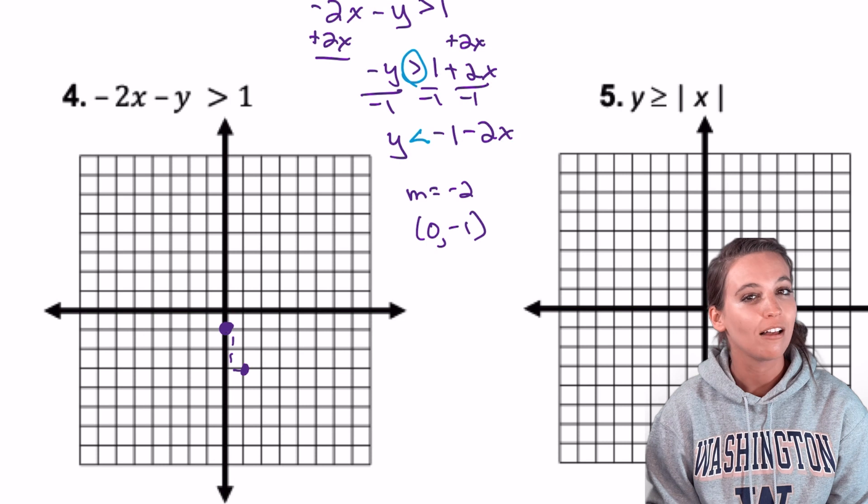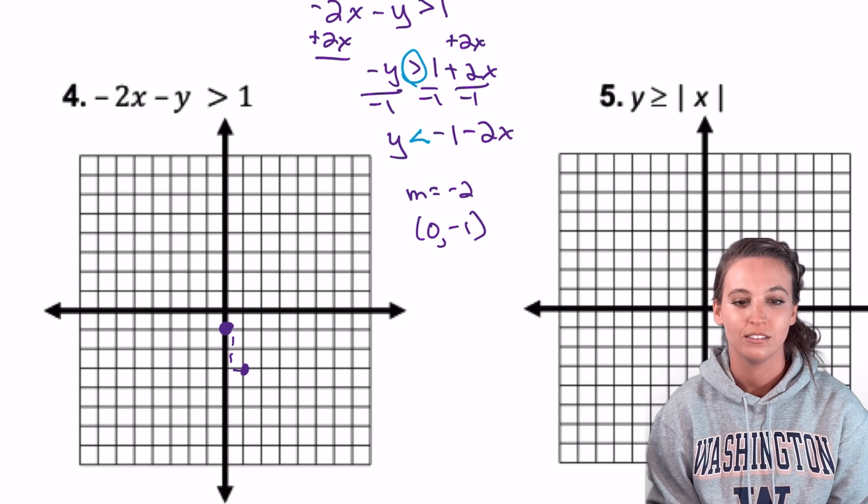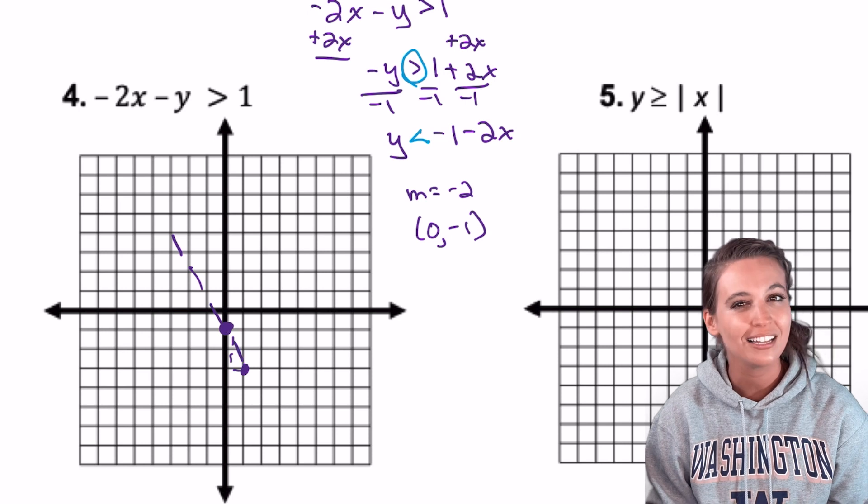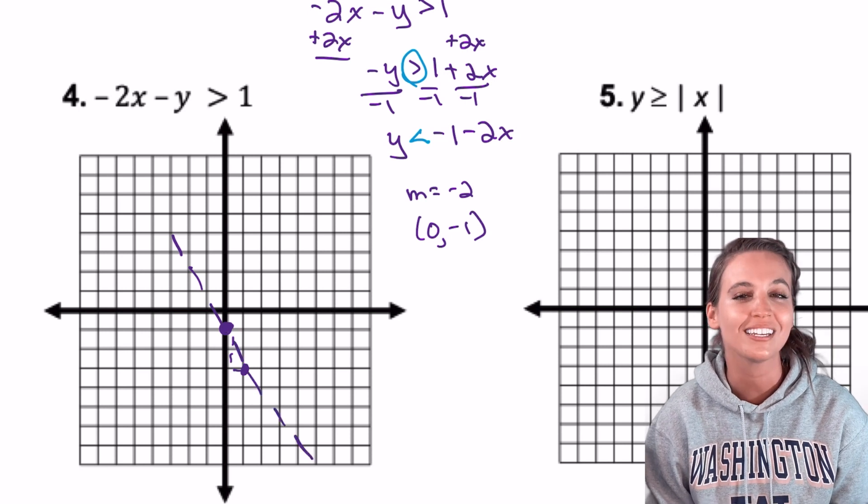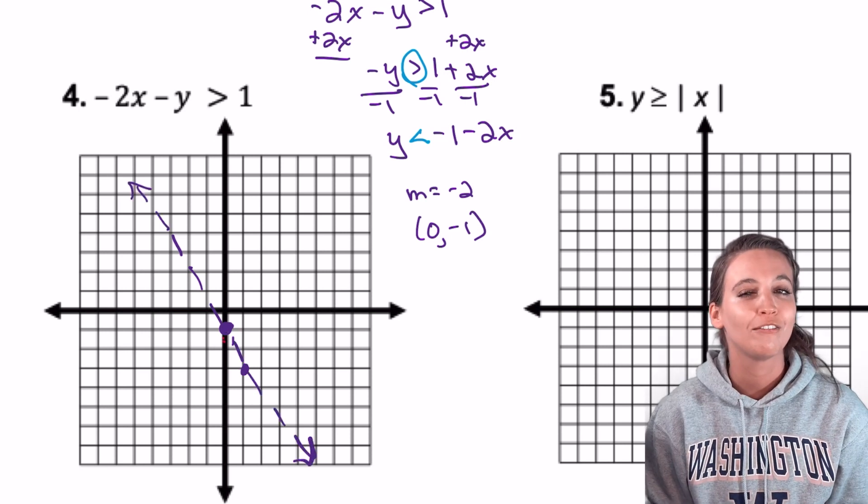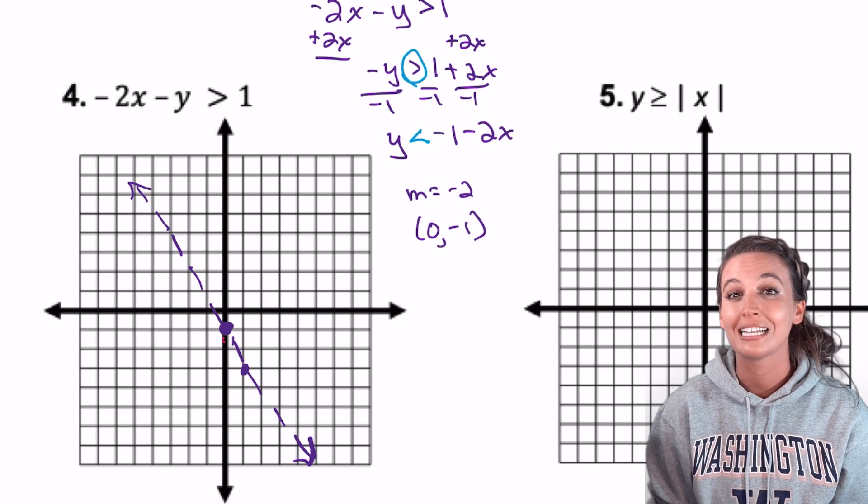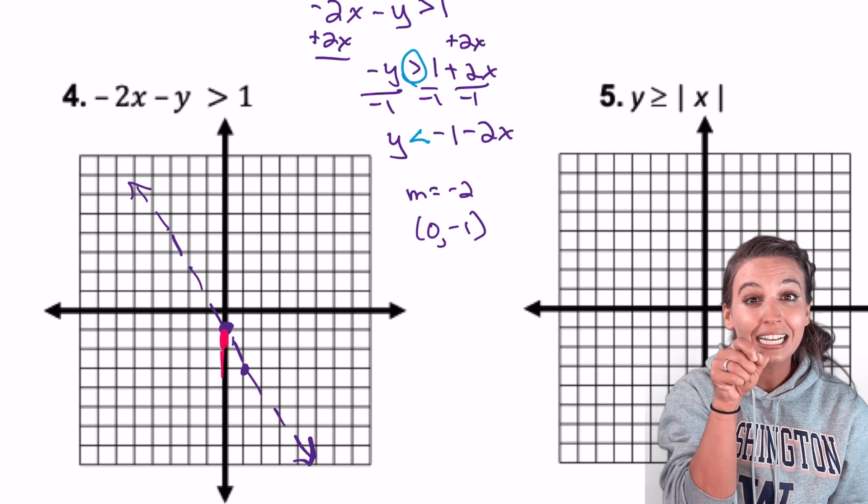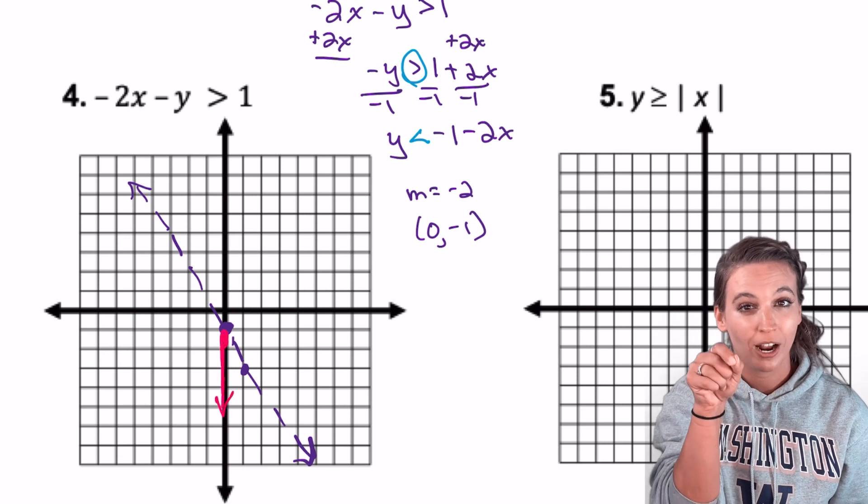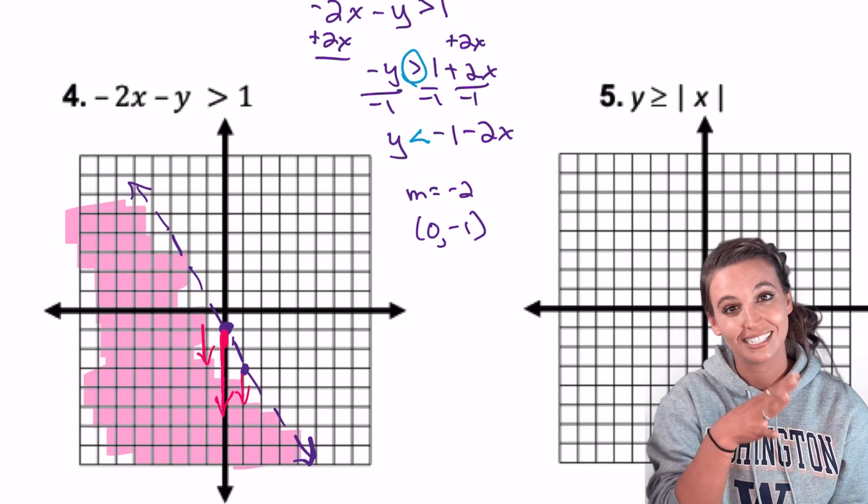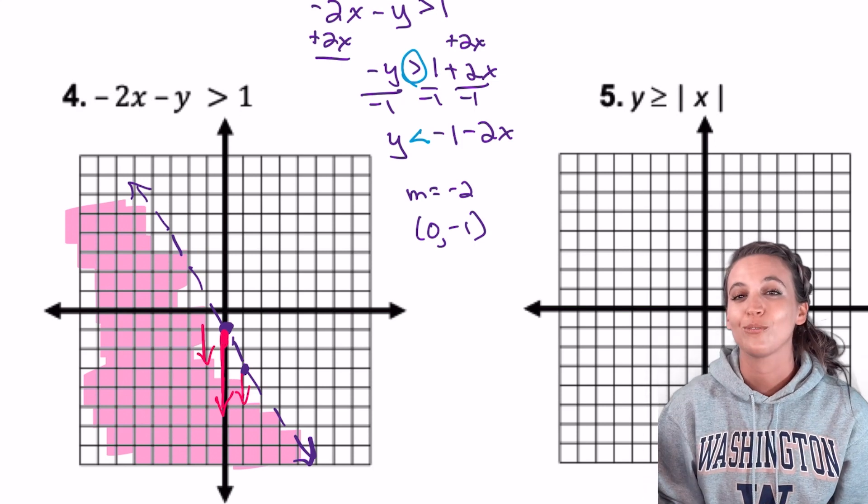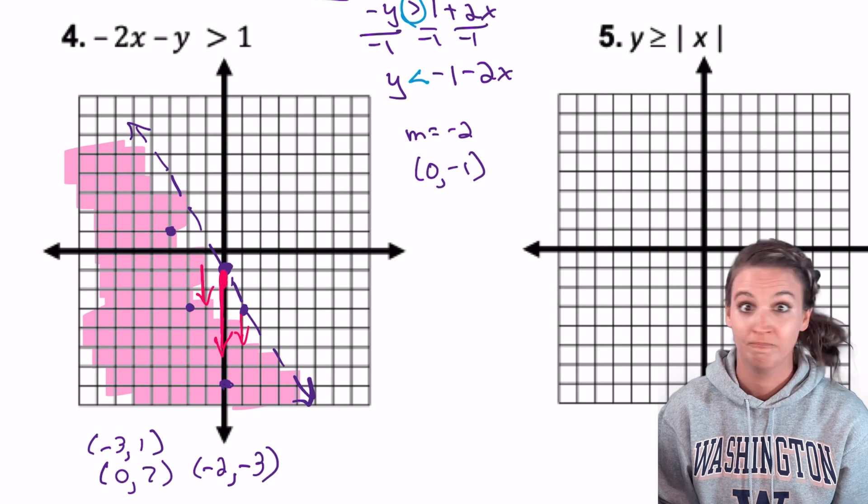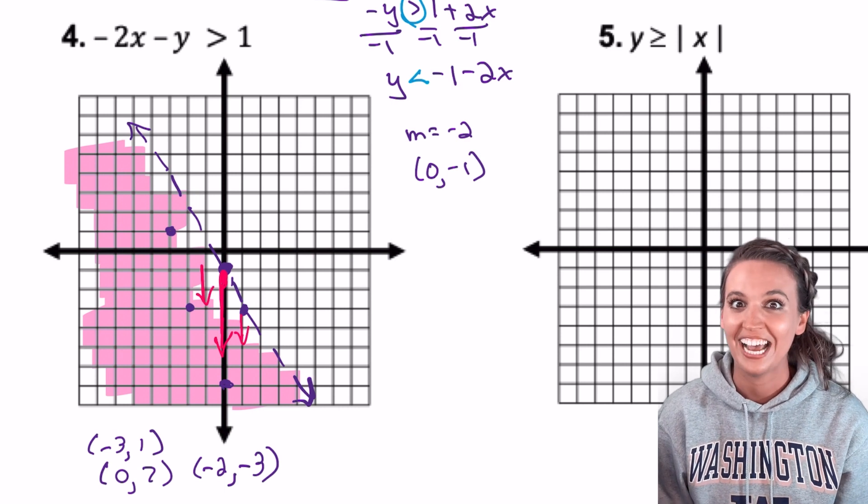Now should this be a solid line or a dashed line? Well, it's just a less than symbol, not a less than or equal to. So it's going to be dashed. Am I going to shade above or below this line? Well, my solved inequality for y is a less than symbol. So I'm going to go to the y-intercept and less than is going to be below. So I'm going to draw an arrow pointing down. So that's the side I'm going to shade. Now state three solutions in the solution set. Can your solution be on the line? No, because it's a dashed line.